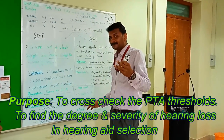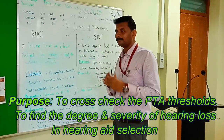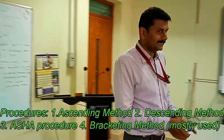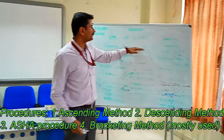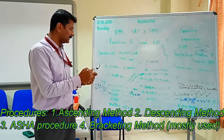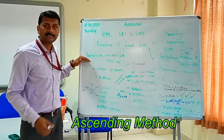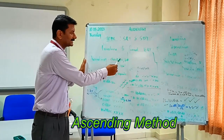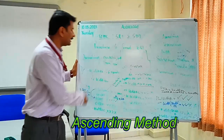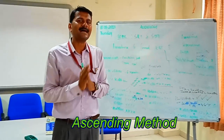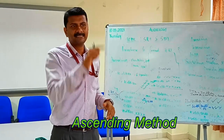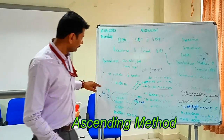Speech audiometry also gives confidence to the client and helps address their question about not hearing speech around them. There are four basic procedures to find SRT: ascending, descending, ASHA method, and bracketing method. The ascending method was given by Chapkin, Font, and Nixon in 1967. In this procedure, we start from the lowest intensity — say, minus 10 dB — and present six spondees at each intensity level.